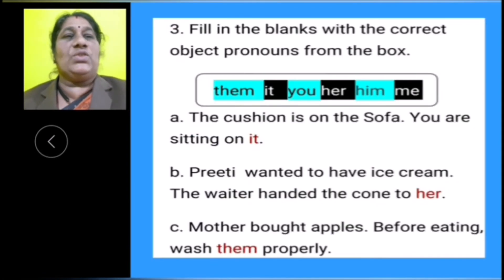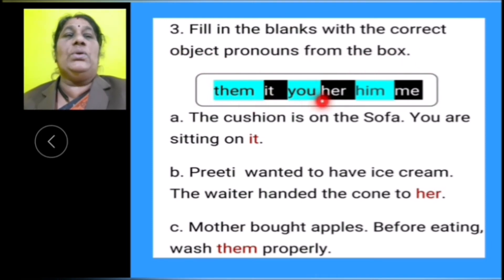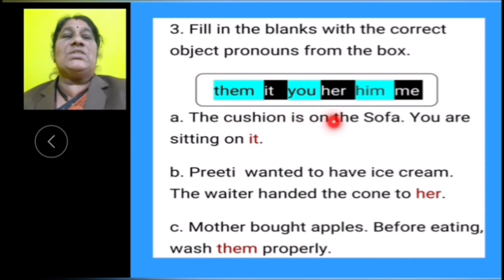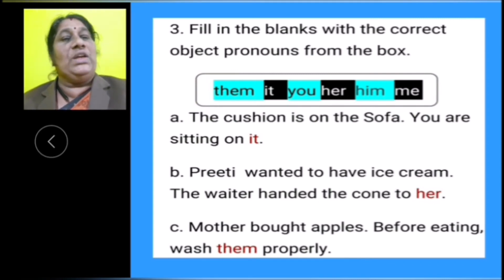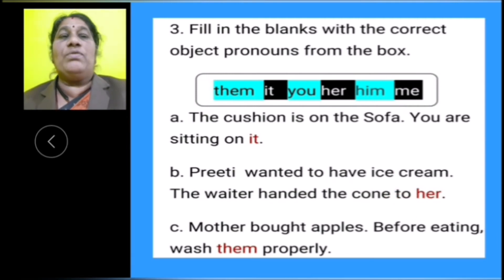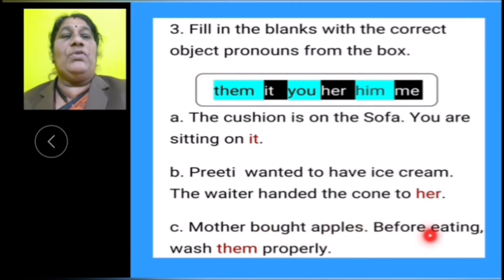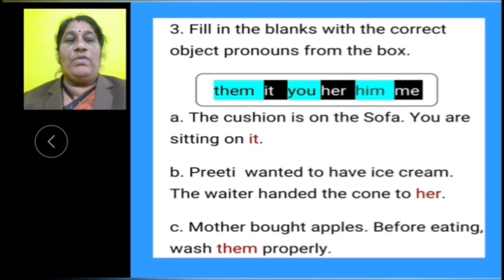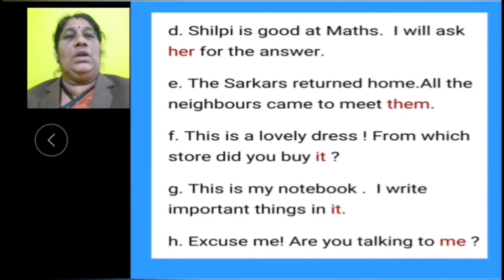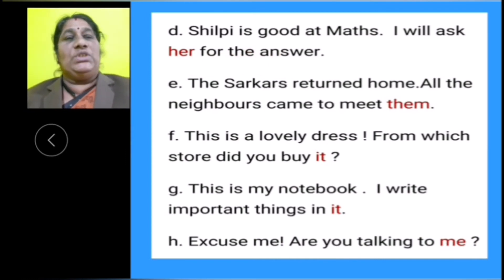Now, let us do the exercise. Fill in the blanks with the correct object pronouns from the box: them, it, you, her, him, me. A: The cushion is on the sofa. You are sitting on it — in place of cushion, object pronoun it is used. B: Priti wanted to have ice cream. The waiter handed the cone to her — in place of Priti, object pronoun her is used. C: Mother bought apples. Before eating, wash them properly — in place of apple, object pronoun them is used. D: Shilpi is good at maths. I will ask her for the answer — in place of Shilpi, object pronoun her is used.